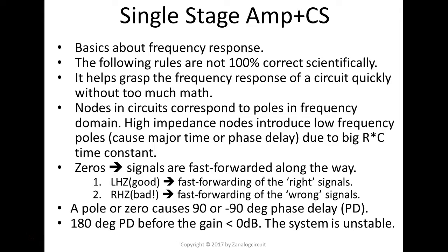So a pole can cause 90 degree phase delay, while a zero causes minus 90 degree phase delay. So when a system has too much phase shift, let's say more than 180 degree phase shift, before the gain can diminish below zero dBs, we'll say the system actually is not stable.